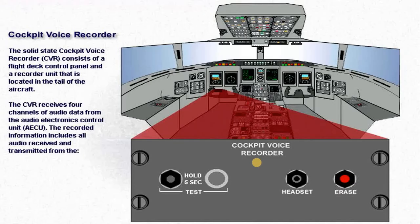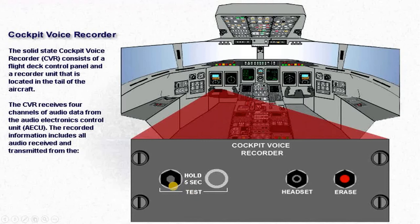After seeing where the system is located, we should look at how the data is being shown or recorded in the cockpit. The cockpit voice recorder is utilized by employing a control unit which provides information to the flight data recorder. If we want to test our system, we would press and hold this button for five seconds. It would test the system and provide accurate information regarding the health of the flight data recorder and the cockpit voice recorder. If we want to erase the data, we could press this button, and here we can insert a headset to see what has been recorded.